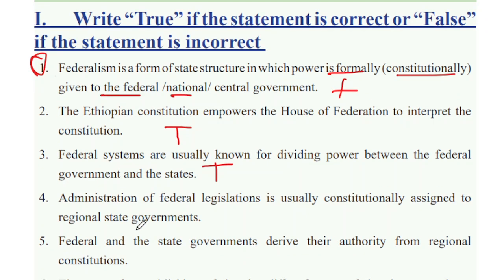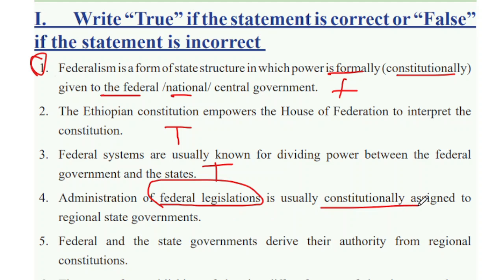All administration of federal legislation is constitutionally assembled by each regional state government. However, it is not solely the federal legislation of the government. Since the president still has authority over the federal government, the president belongs to the federal government.